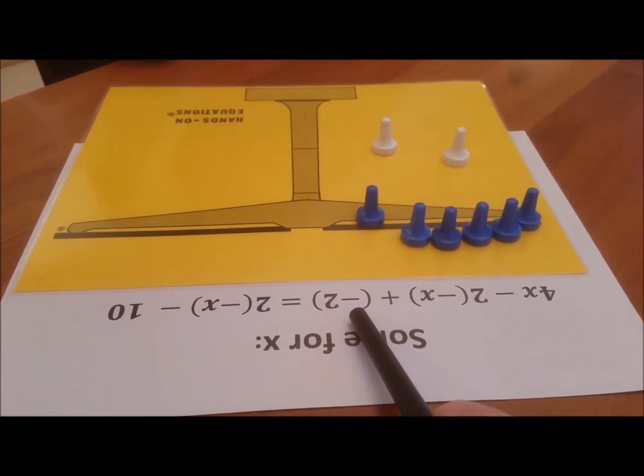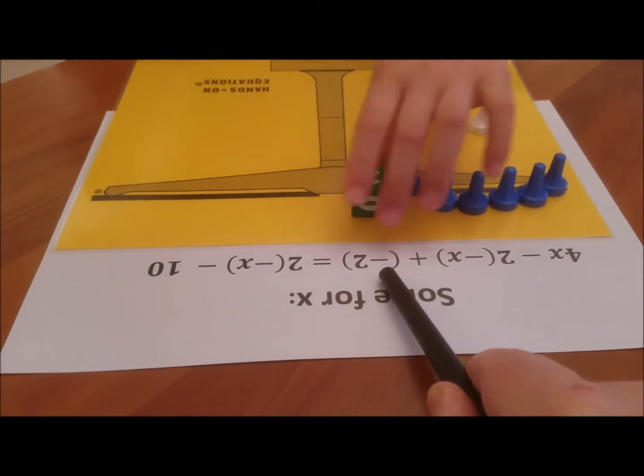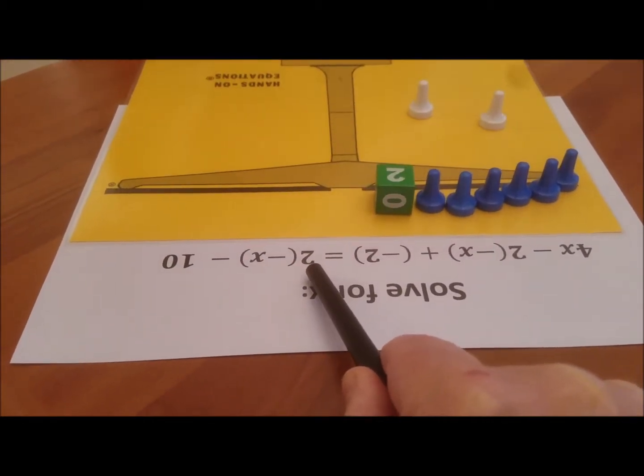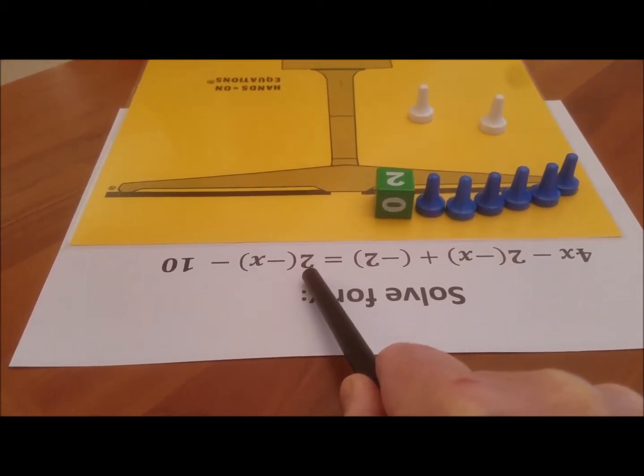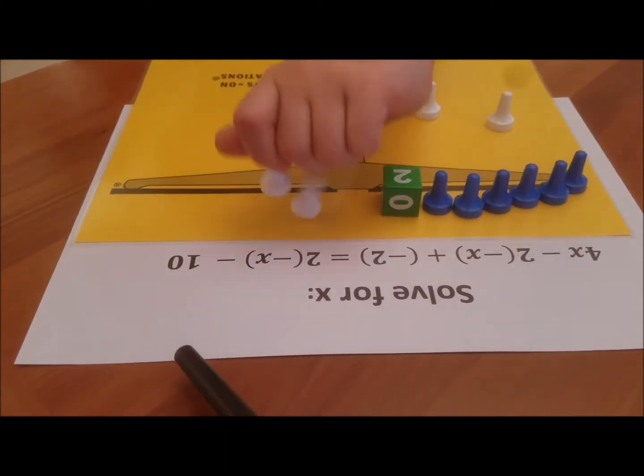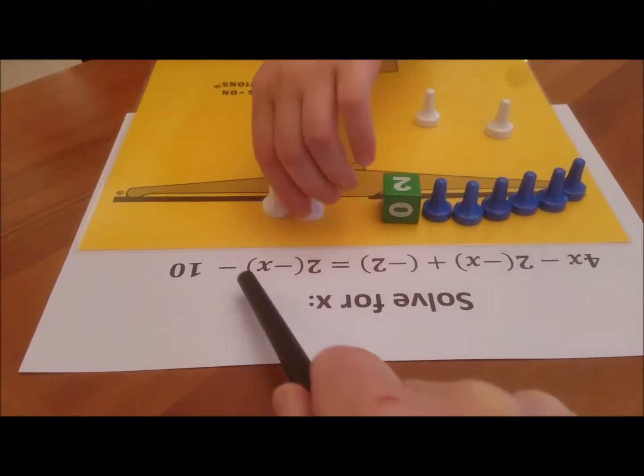Plus negative two. Great. All of that is equal to what? Two times the opposite of x. Good. Take away two. Yes.